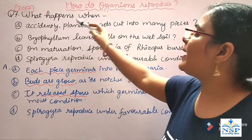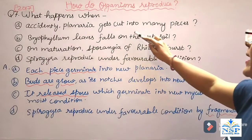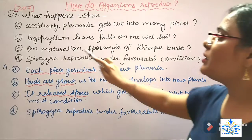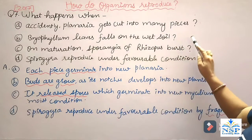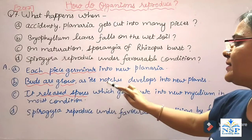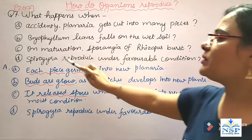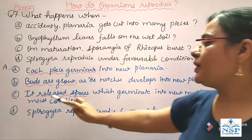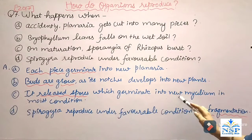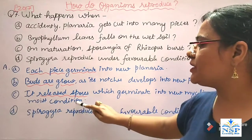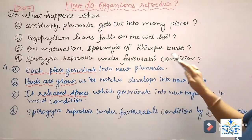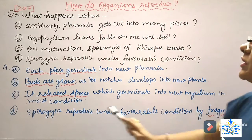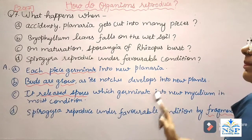The next important question is: what happens when a planaria gets accidentally cut into many pieces? Each piece regenerates into a new planaria. When bryophyllum leaves fall on wet soil, buds grow as notches develop into new plants. On maturation, the sporangium of rhizopus bursts, releasing spores which germinate into new mycelium in moist conditions. Spirogyra reproduces under favorable conditions by fragmentation. These are all vegetative modes of reproduction in plants.